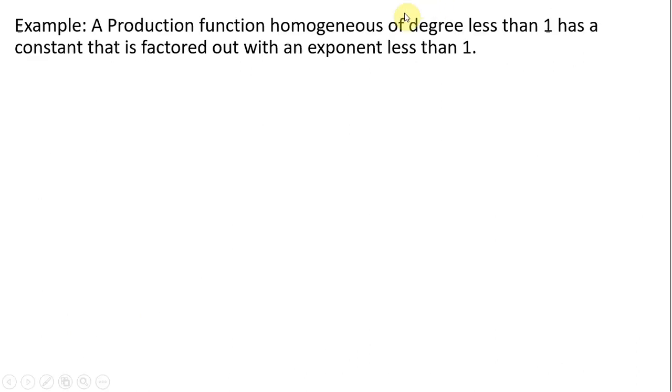A production function, homogeneous of degree less than 1, has a constant that is completely factored out, but this time with an exponent less than 1. Here will be our example. So multiplying K and L by this constant C, simplifying a little bit.